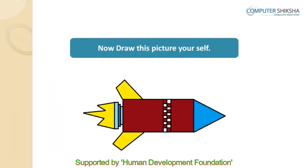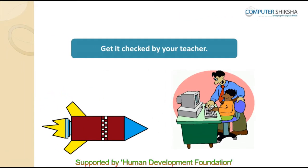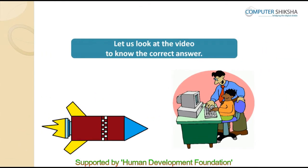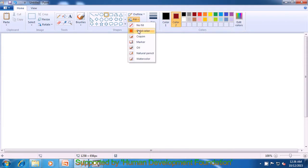The next picture is of a rocket, which you will make with the line and rectangle tool, and after you are done, show it to your teacher. If you are not able to make it, watch the videos again. In order to make the picture of a rocket, first select the rectangle tool, choose color 1 as black and color 2 as dark brown, and from the fill option, choose solid fill.